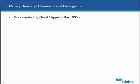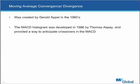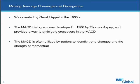Starting off here — the moving average convergence divergence. Let's break down where it came from and what it is. The moving average convergence divergence was created by Gerald Appel in the 1960s. It did not gain popularity though until about the mid-1980s when the MACD histogram was developed by Thomas Aspie. It provided a very good way to anticipate crossovers in the MACD. It's become one of the major tools that a lot of FX traders use to analyze markets, and is often used to identify trend changes as well as strength of momentum.